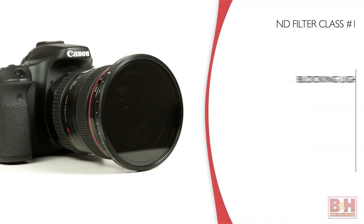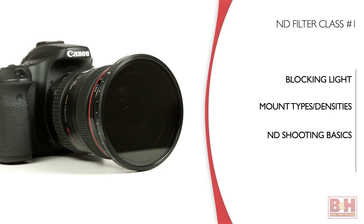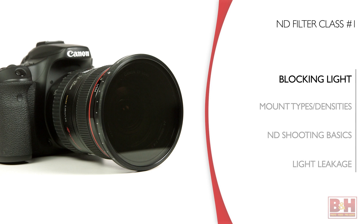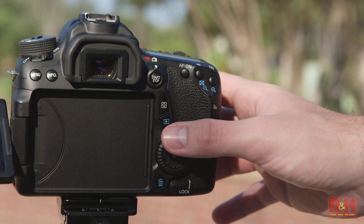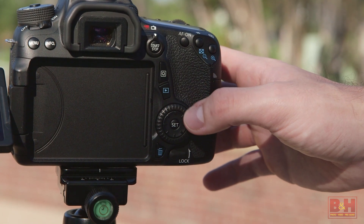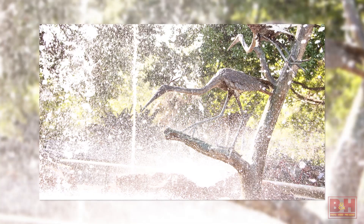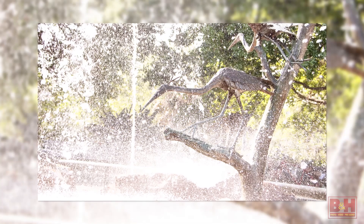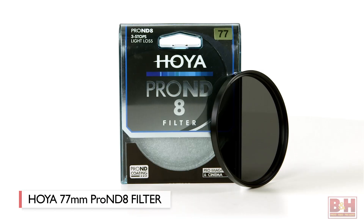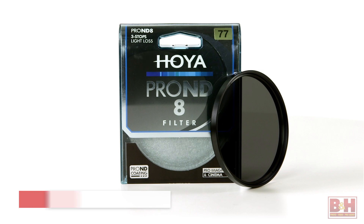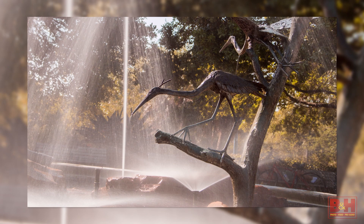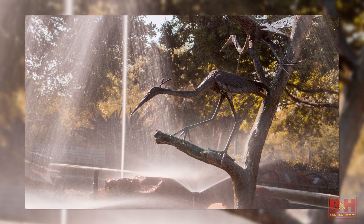ND filters can help in several situations. If you have a target aperture you want to use to achieve a shallow depth of field but you're shooting in sunshine, with that much light, even ISO 100 and a fast shutter speed might still let in too much light. Adding an ND filter, like this Hoya Pro ND, will block enough light so you can get the shot.